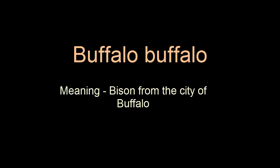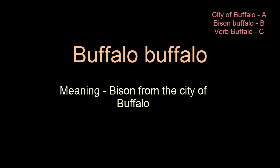Now that we have a toolkit, let us attempt to understand the sentence. I will add some punctuation for your convenience. Let us concentrate on the first bit. This means the bison or the buffalo from the city of Buffalo. For convenience, let me denote the city of Buffalo with an A, the bison buffalo with a B, and the verb buffalo with a C. In this chunk, the first buffalo is of type A and the next one is of type B.